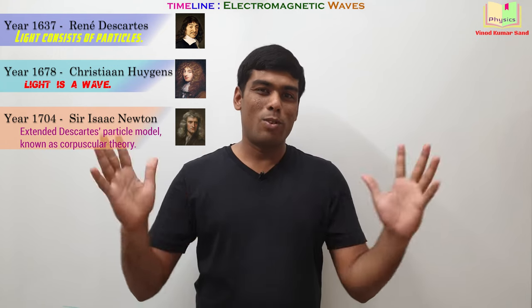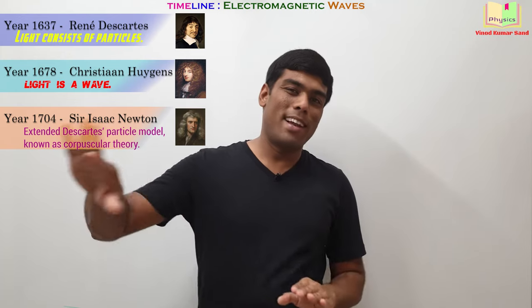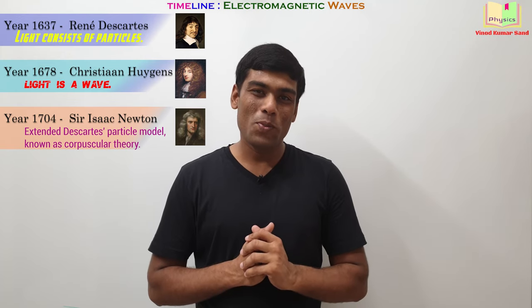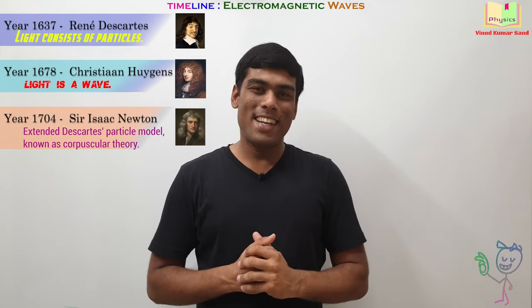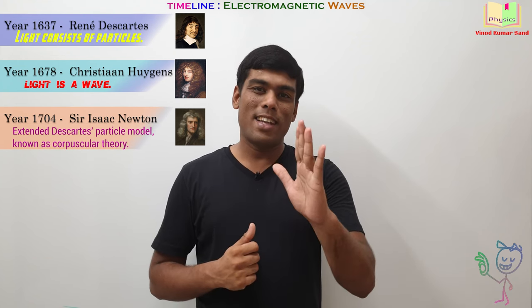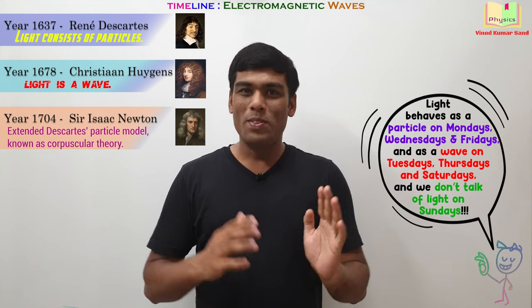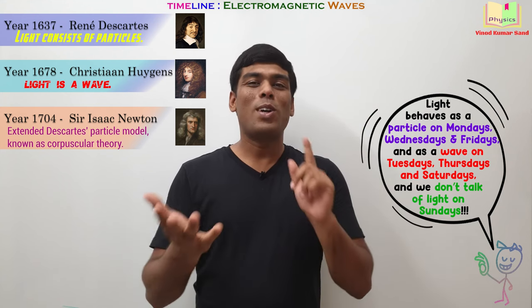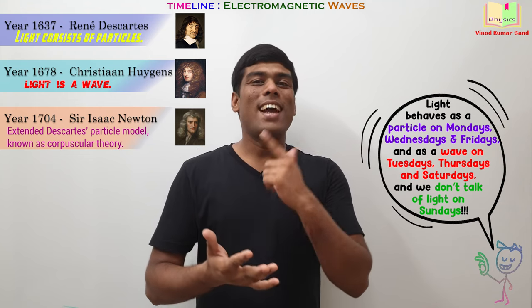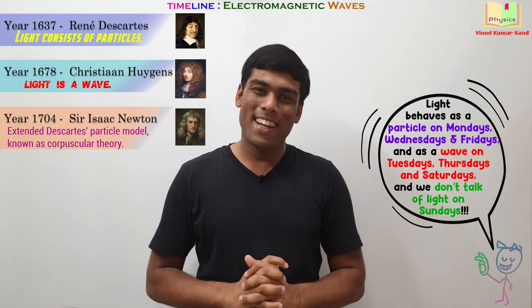So there was a dilemma. There was a fight among the scientists. Few were telling light is a particle and few others were telling light is a wave. Someone said at that moment of time, why we people fight? Let's decide that light behaves as a particle on Monday, Wednesday and Friday. Light behaves as a wave on Tuesday, Thursday and Saturday. And on Sunday, we do not talk of the light.